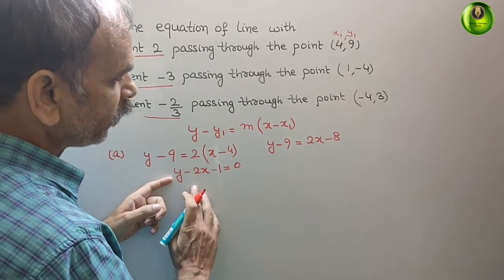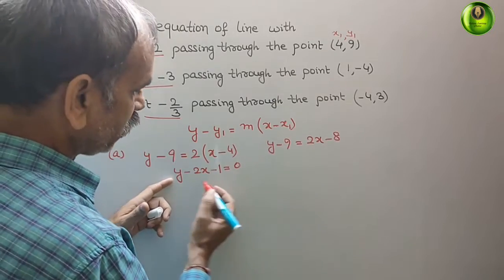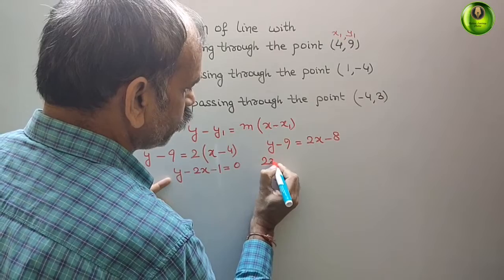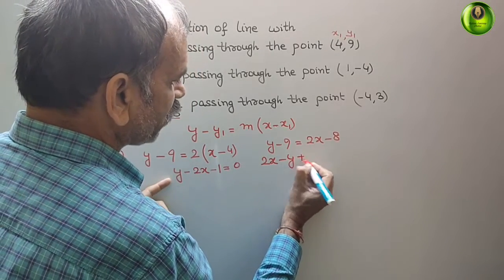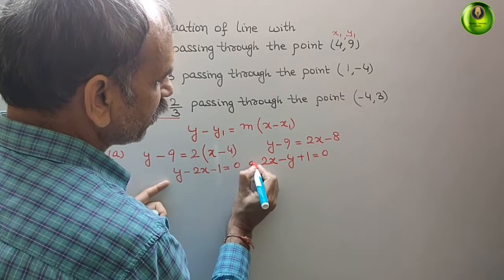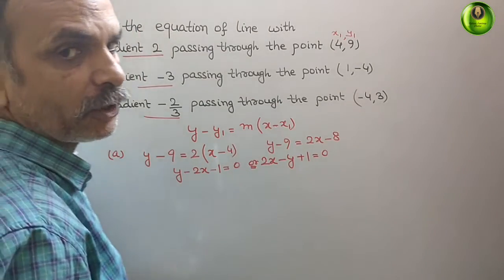Or, you can write in standard form as x. What it will be? Minus 2x will become plus. So here it will be 2x minus y plus 1. That is equal to 0. In this, anything you can write. That is your equation.